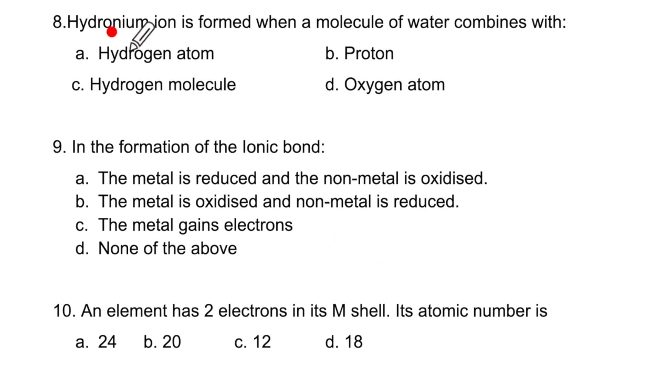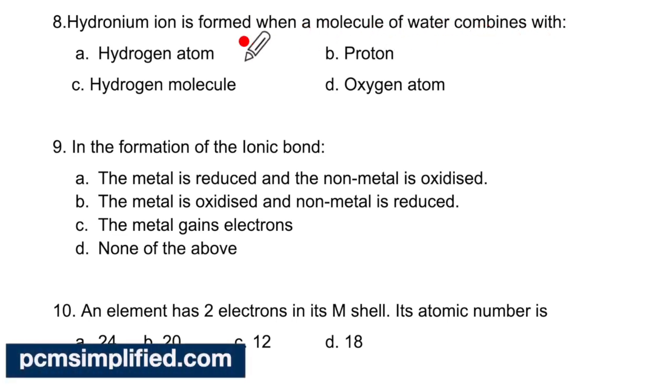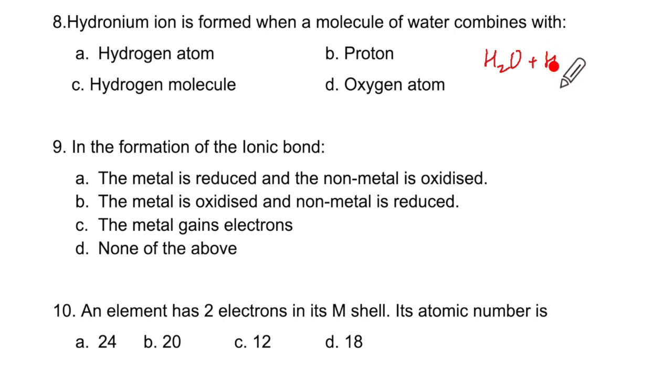Hydronium ion is formed when a molecule of water combines with a hydrogen ion. Now hydrogen ion is only one proton. It does not have electron. So it is not the atom. It will be proton. They tell you proton. But remember, hydrogen has only one proton and that one electron is gone. So it has got positive charge.